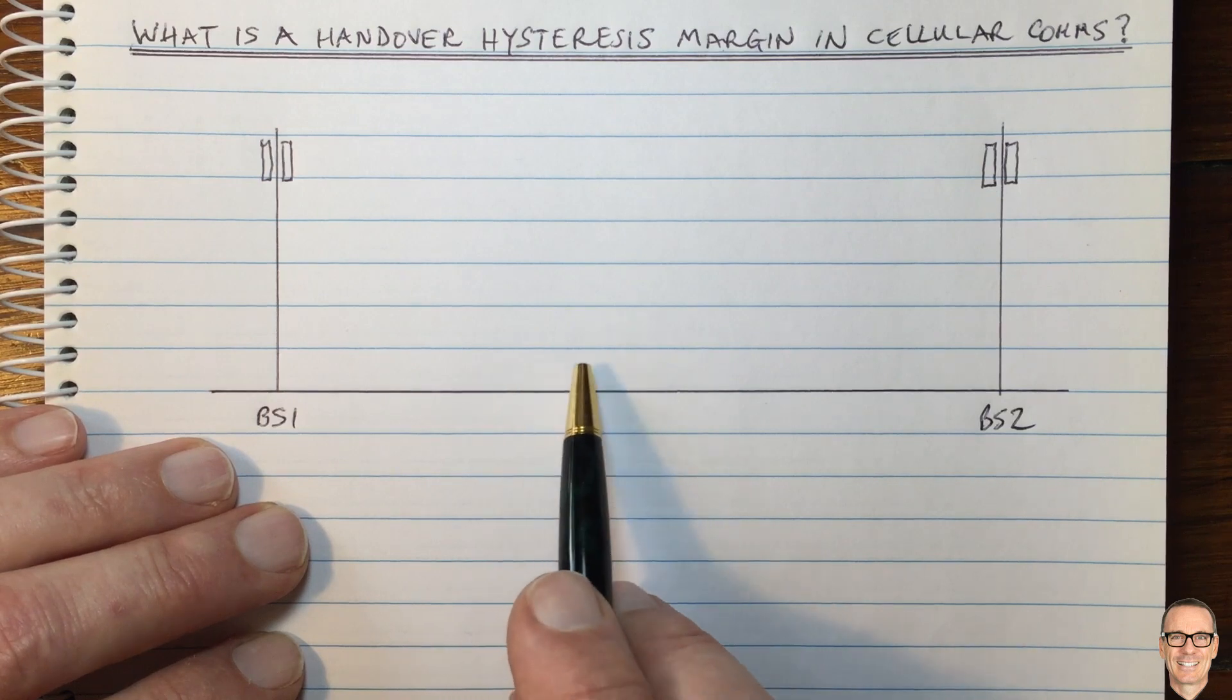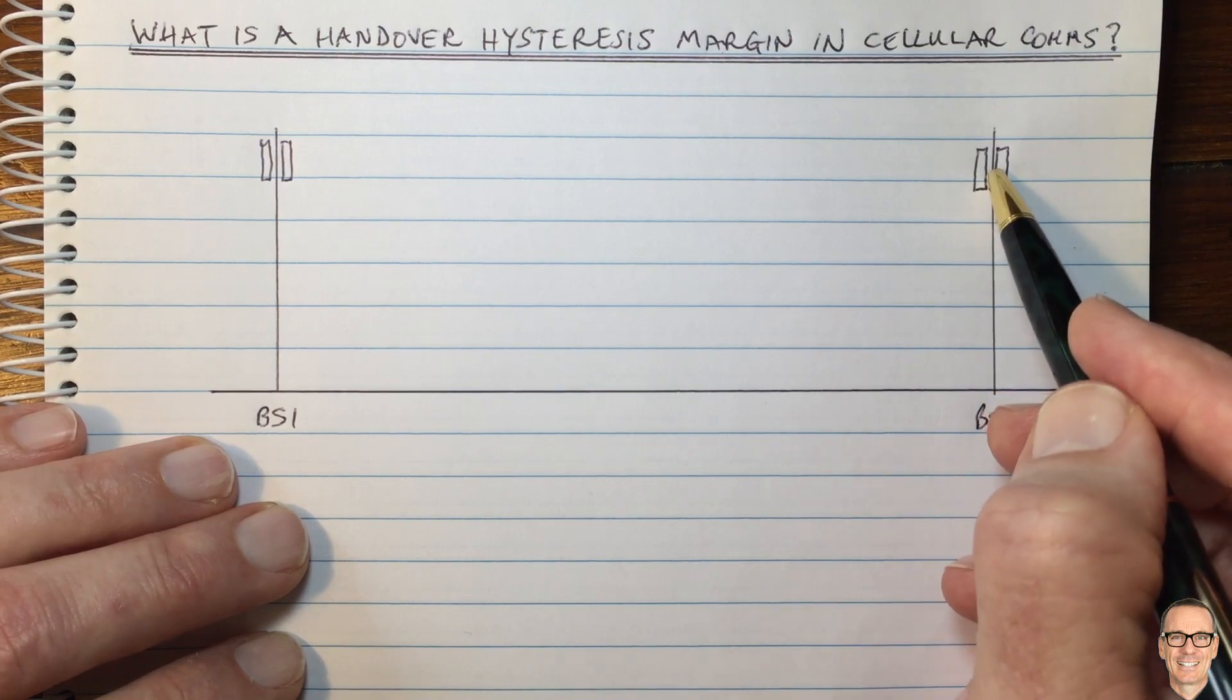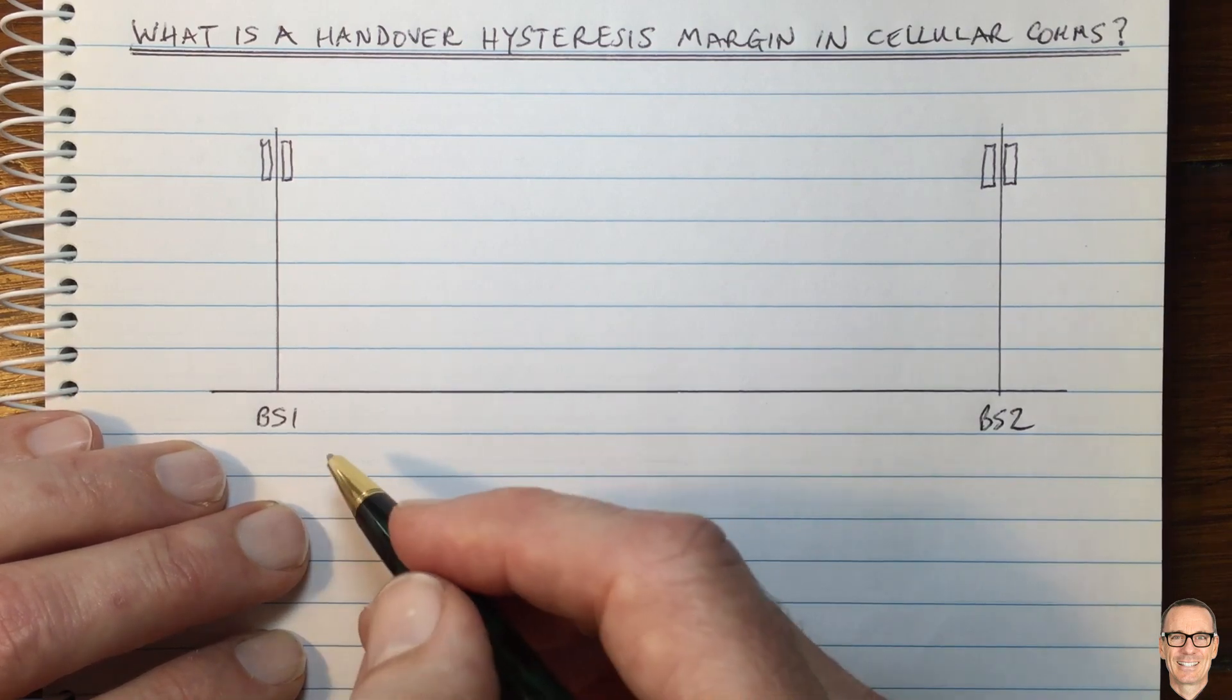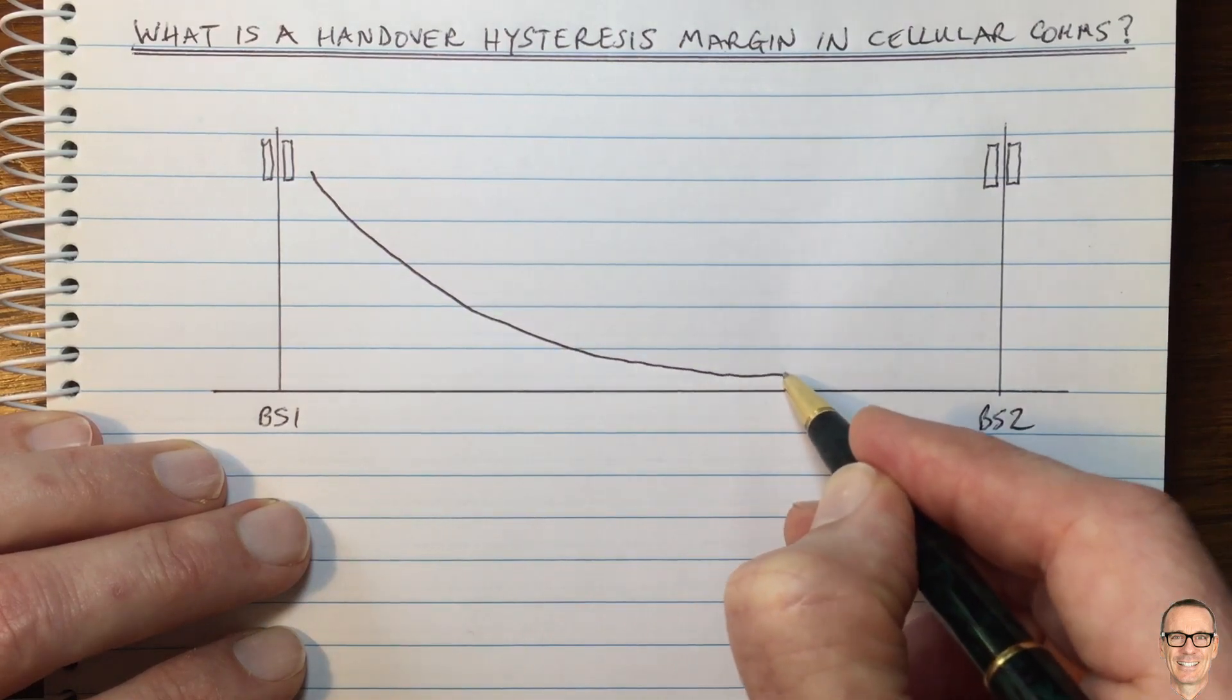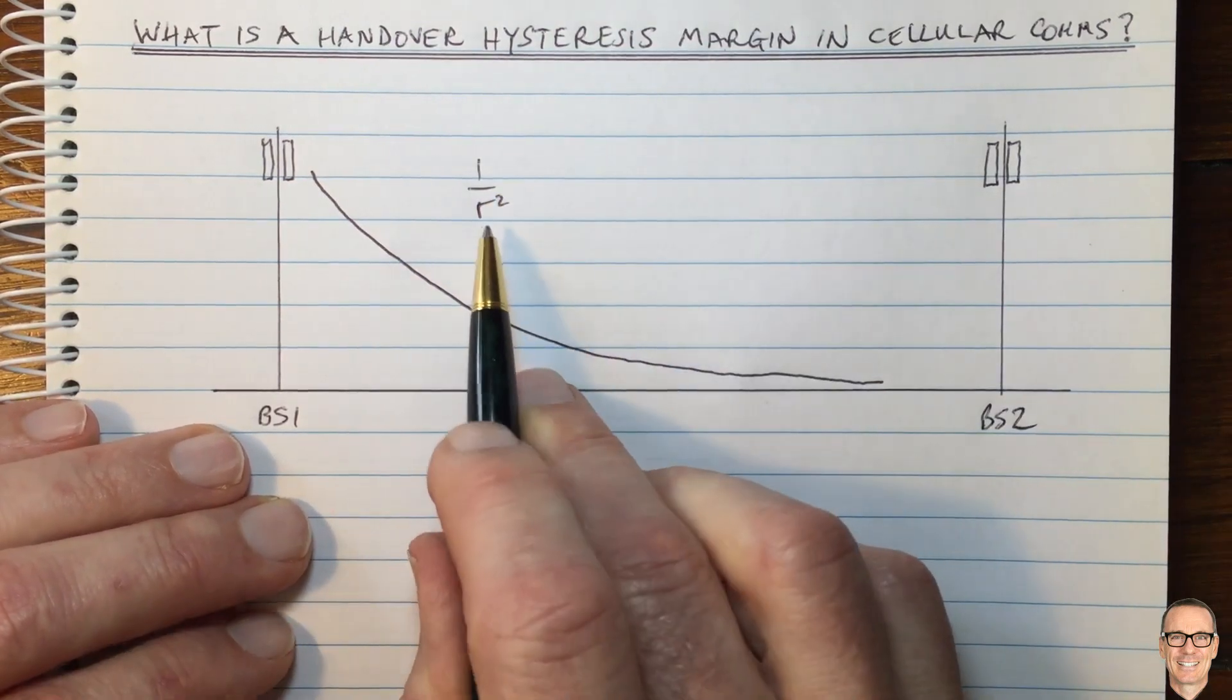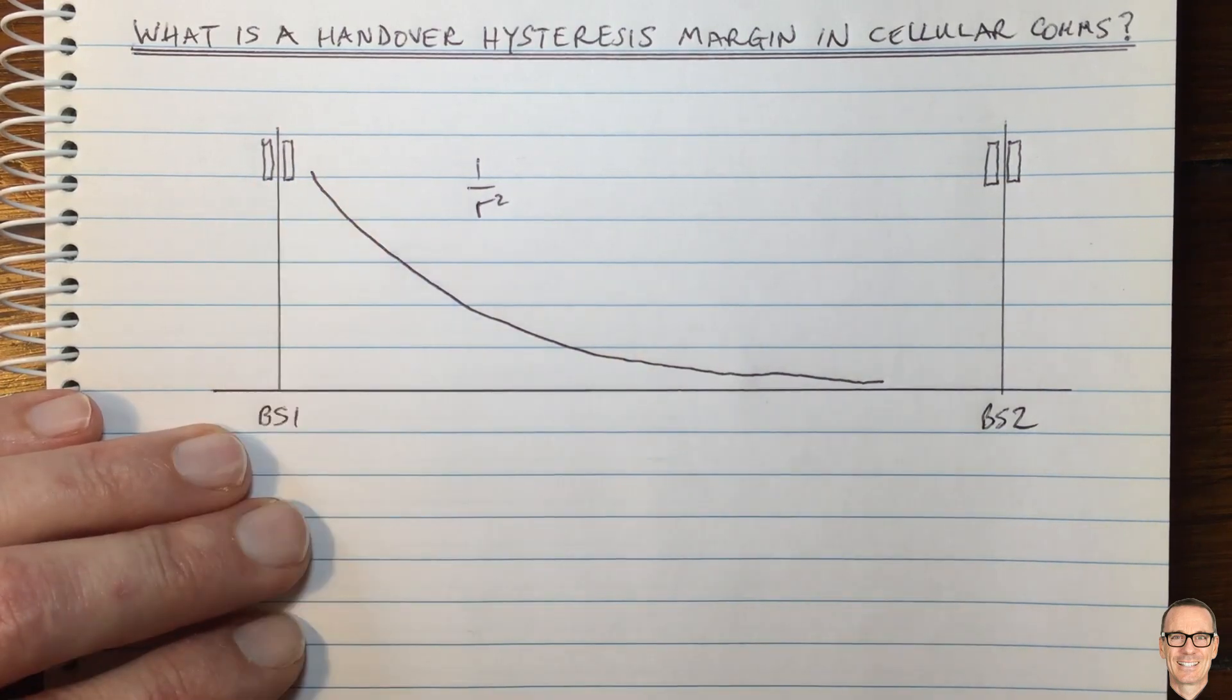You need to hand over your signal from primarily communicating with one base station to start communicating with another base station. And of course, power is one of the most important elements in the communication link. So transmission power goes down as you move away from the base station as a function of one divided by R squared under some situations of free space communications and isometric antennas.